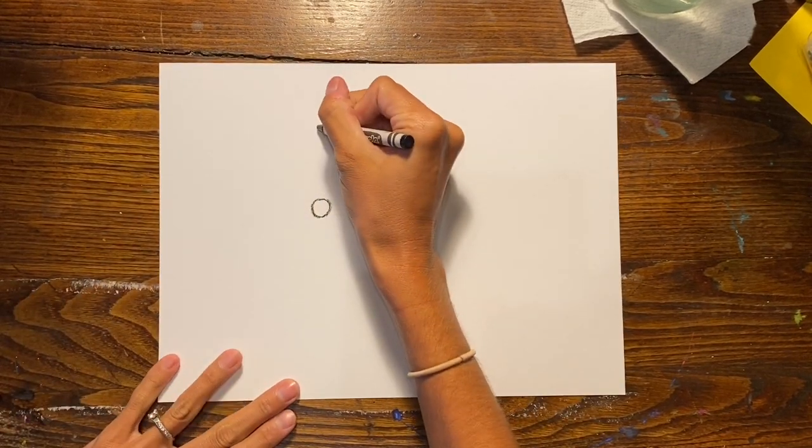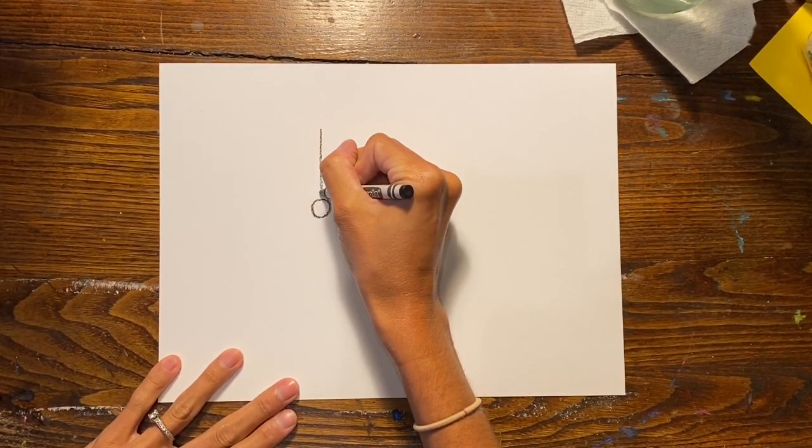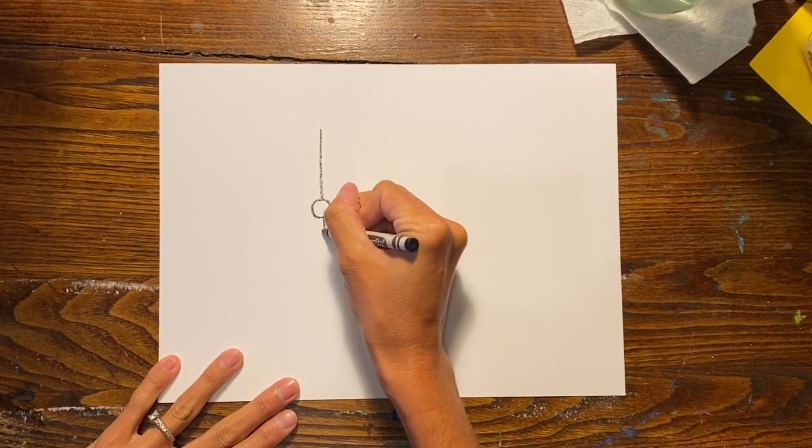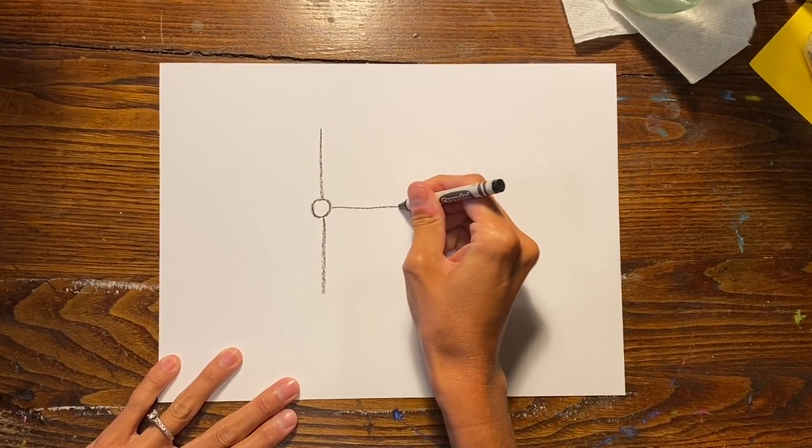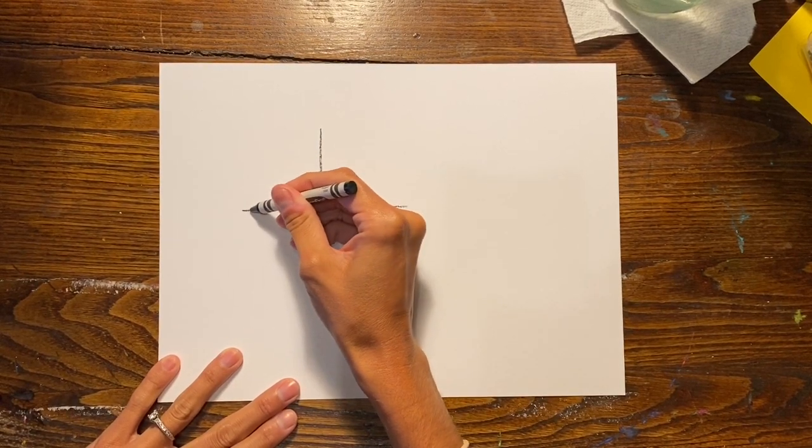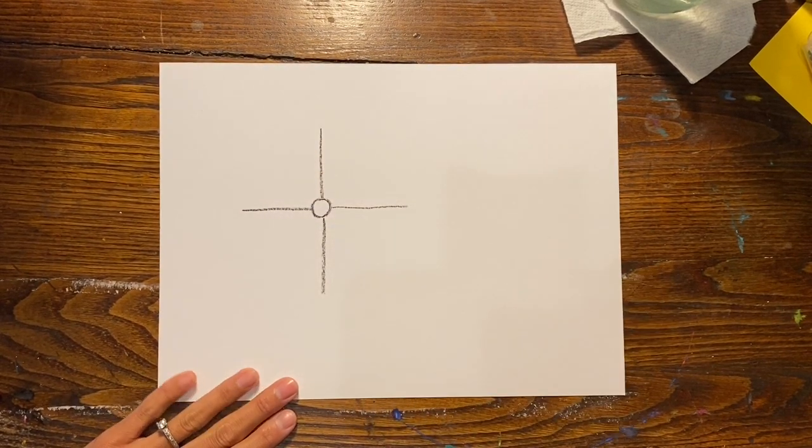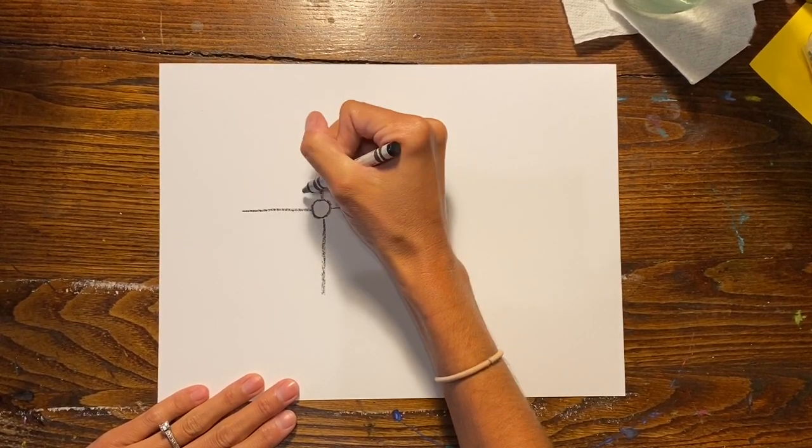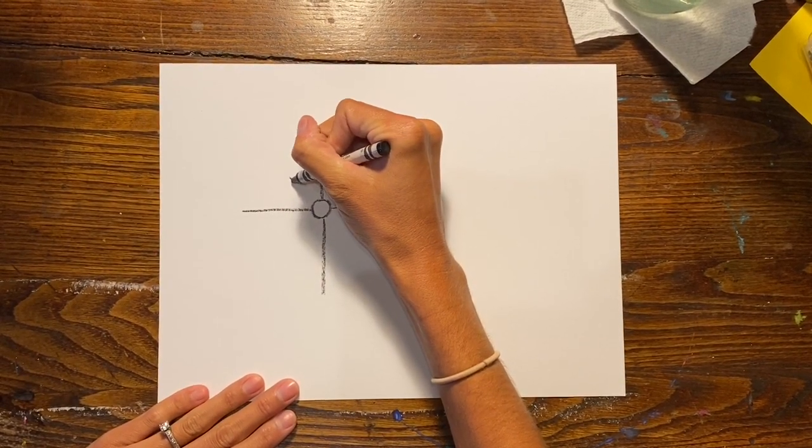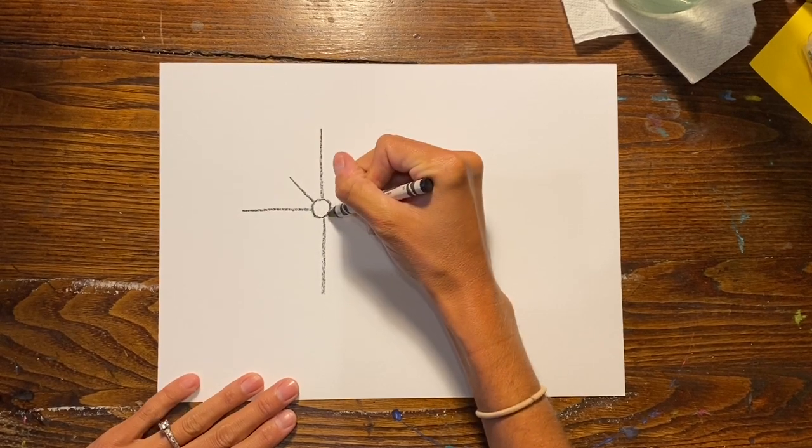Coming out of the center of the circle we just drew and it's gonna make a T shape. You can see that I am not drawing my lines through the circle that I drew but I'm going to go right up to the edge. Now we are going to draw some smaller lines making an X, again not going through the center of that circle but just going all the way up to the edge.